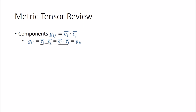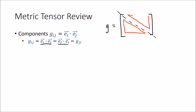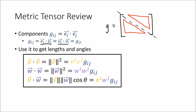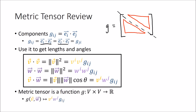Since the dot product doesn't care about the order of the inputs, the ij component of the metric tensor equals the ji component. So the metric tensor is symmetric about the diagonal — the two triangles are mirror images of each other. The metric tensor can be used to get the lengths of vectors and the angles between any pair of vectors using these formulas. So the metric tensor is a function that takes two vector inputs from a vector space V and produces a scalar output. When we want an angle, we put in two different vectors; when we want vector length, we put in the same vector twice.